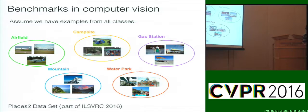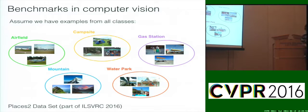We've had a priori knowledge to train classifiers that can ideally deal with new examples of those known classes, and this is basically how we proceed in most cases. Face recognition is the same story. Even when we're doing something more basic like evaluating edge detection, it's the same story — we have these closed data sets.